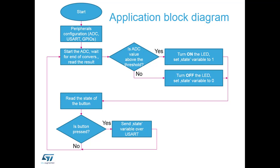We start the application, configure peripherals, then start the ADC and wait for a conversion result. Is the ADC above the threshold? If yes, we switch the LED on; if no, we switch it off. Then we check if the push button has been pressed. If no, we loop back to the ADC. If yes, we transmit information over the UART and loop back. For this hands-on, we'll ignore the push button and UART and only implement the ADC and LED control.